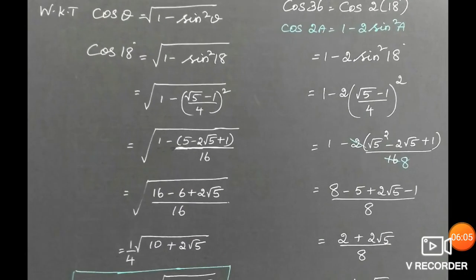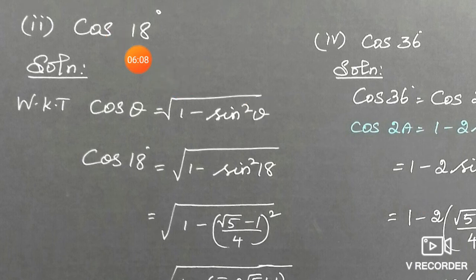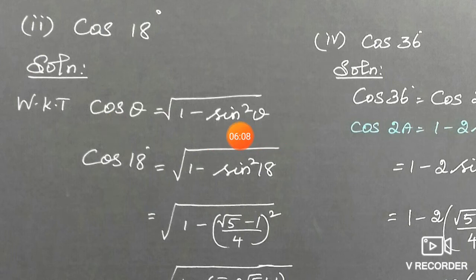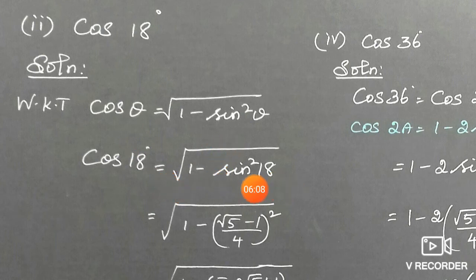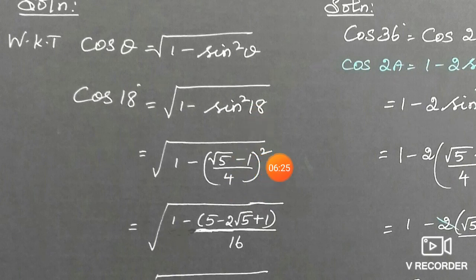Next, the second subdivision: find the value of cos 18°. We know the identity cos θ = √(1 − sin²θ). Substituting θ = 18°: cos 18° = √(1 − sin²18°). From the first subdivision, sin 18° = (√5 − 1)/4. Substitute this in and square it.